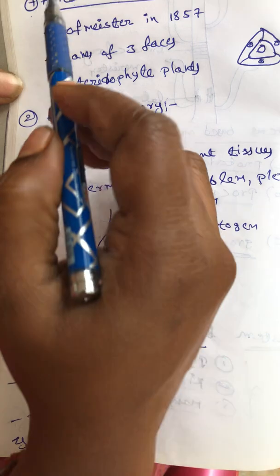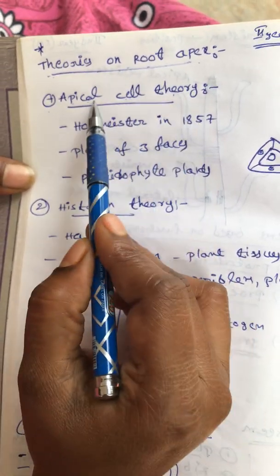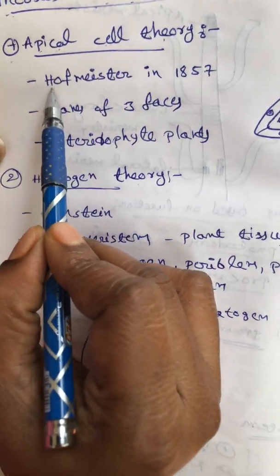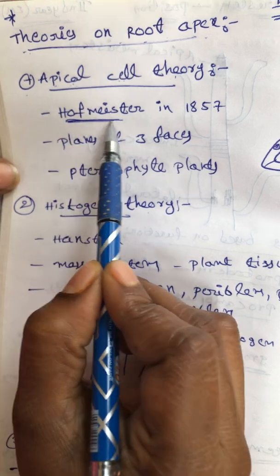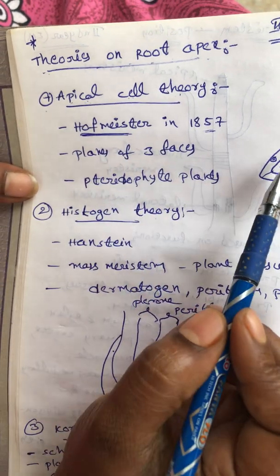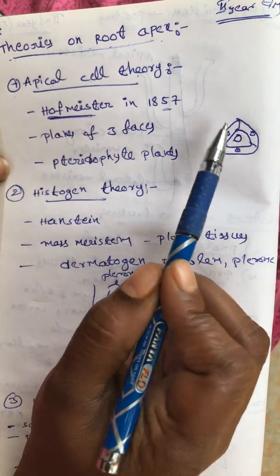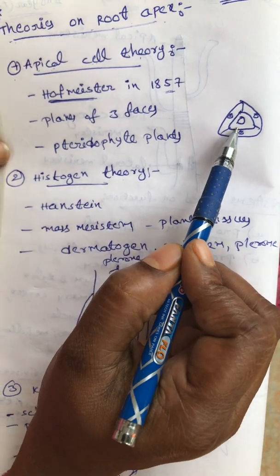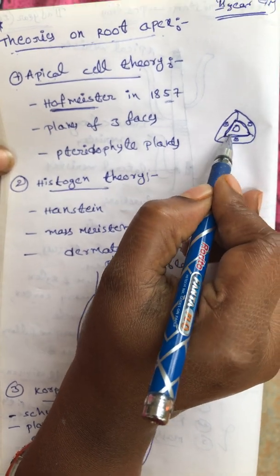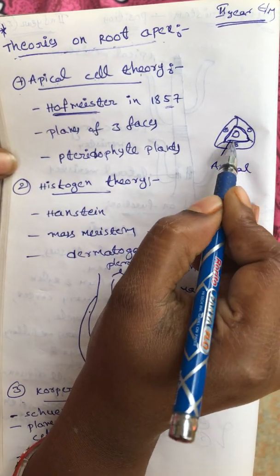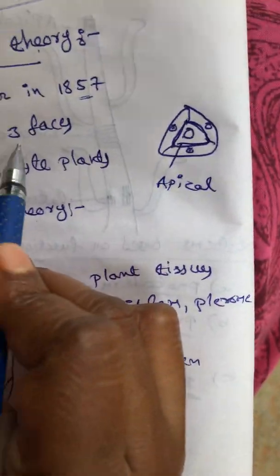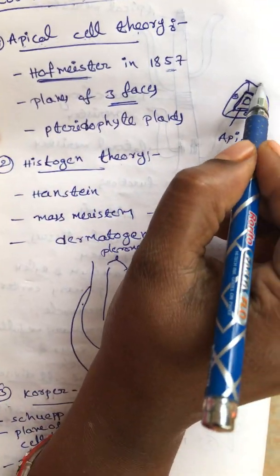First, about apical cell theory. It is proposed by Hofmeister - the scientist name is Hofmeister - in 1857. This theory is depending upon the planes of divisions, especially a single apical cell undergoes a number of divisions. This single apical cell undergoes divisions observed in three phases.